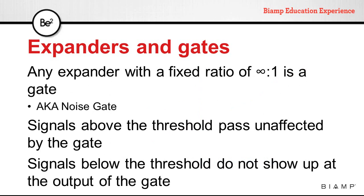So any expander with a fixed ratio of infinite to 1 is considered to be a gate or a noise gate. Signals above the threshold will pass unaffected by the gate. Any signals that are below the threshold will not show up at the output of the gate.